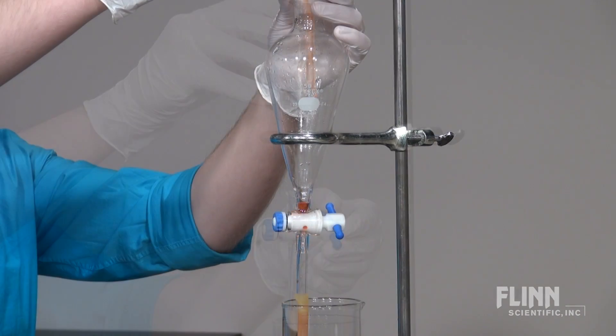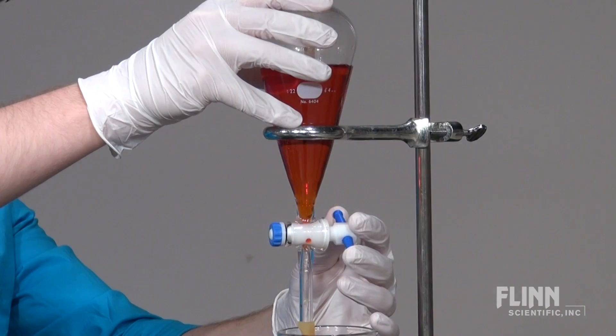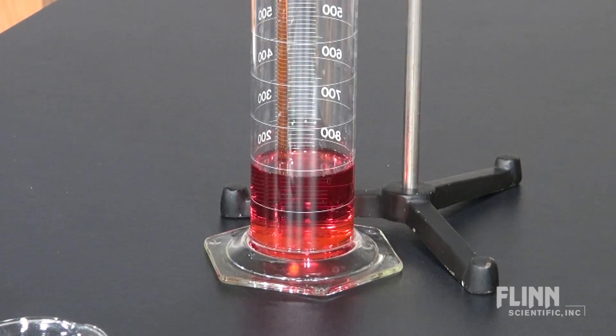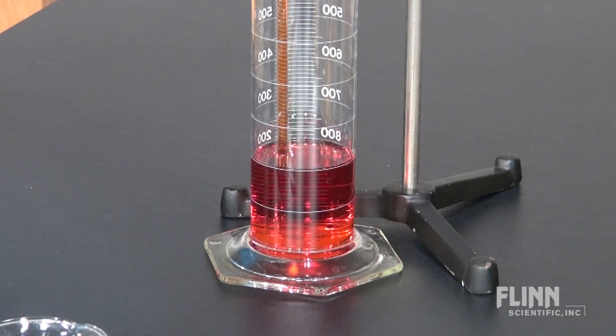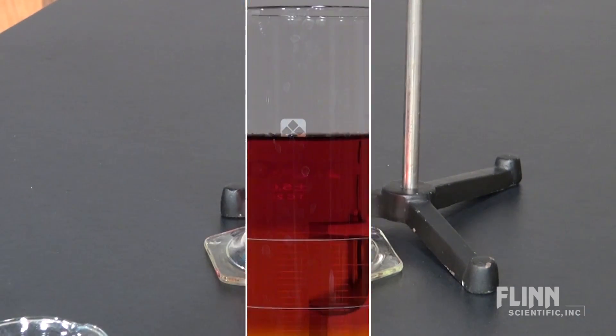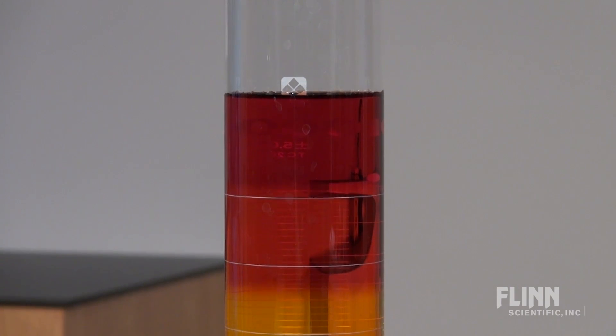Add in the next solution and slowly open the stopcock to let it run into the bottom of the cylinder. Repeat these steps for the other solutions. The colors remain separated because the density of each solution is different.